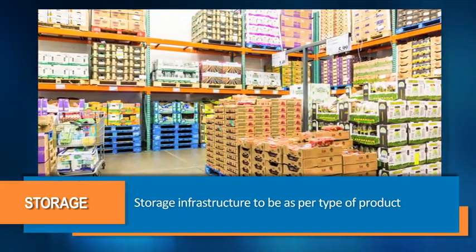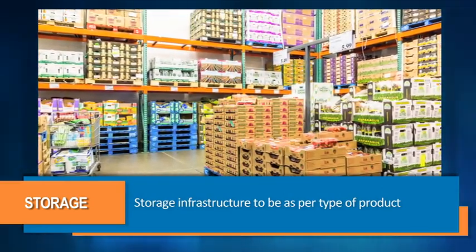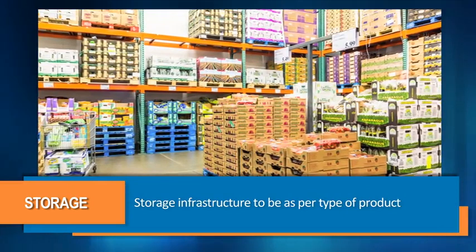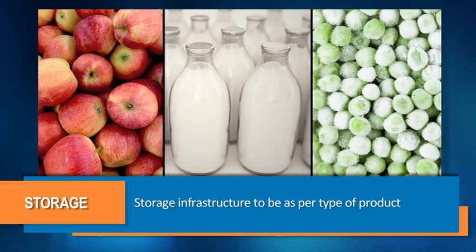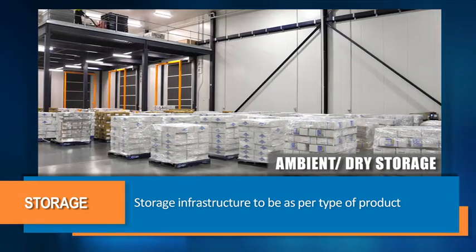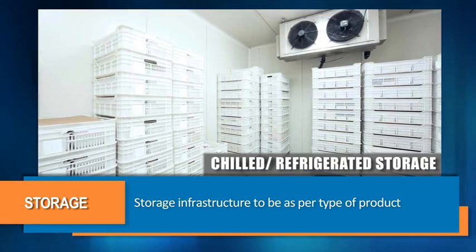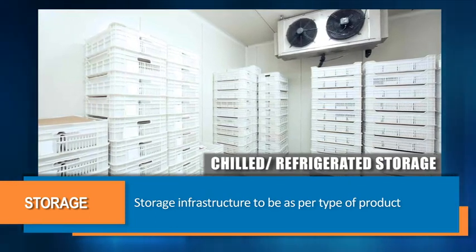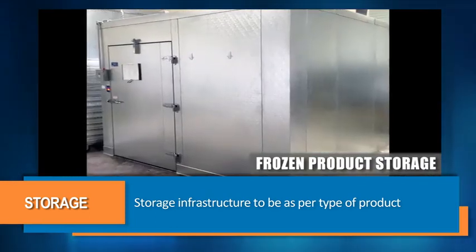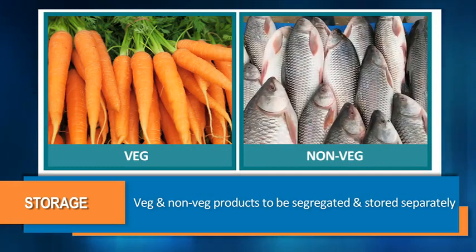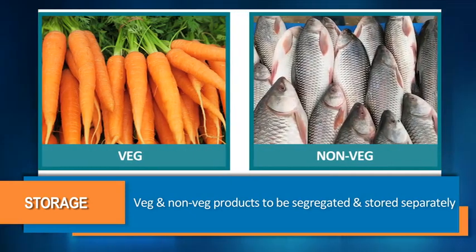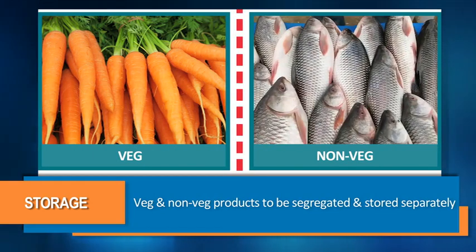The storage infrastructure shall be as per the type of product, broadly falling into three types: ambient or dry storage, chilled or refrigerated storage, and frozen product storage. Additionally, vegetarian and non-vegetarian products must be segregated and stored separately to avoid any type of cross-contamination.